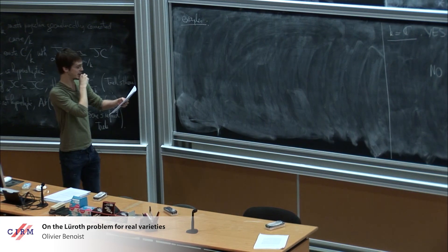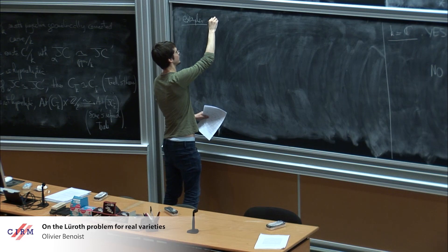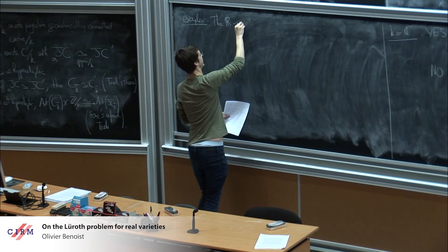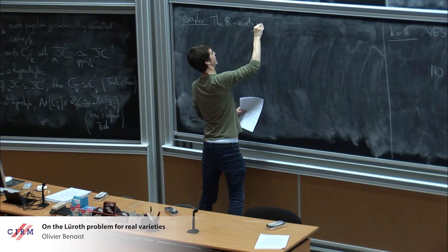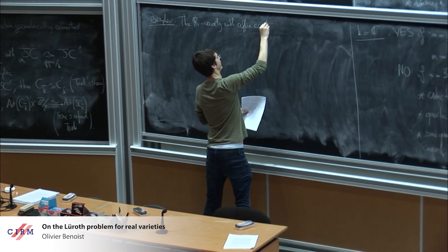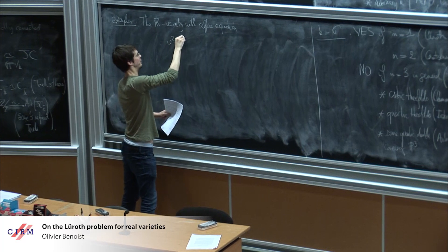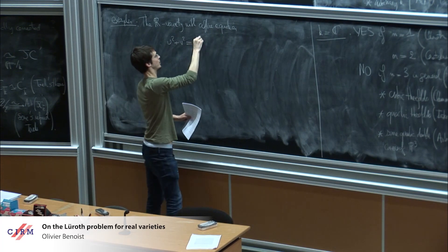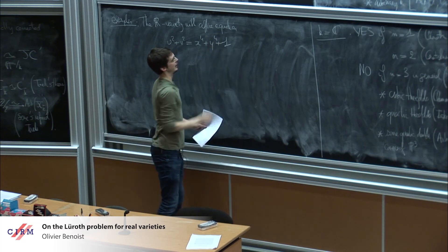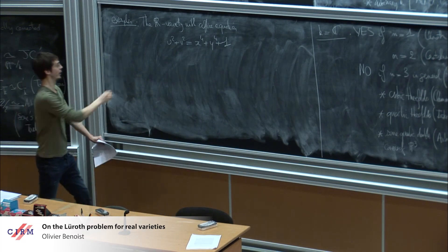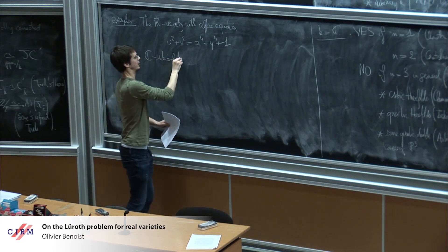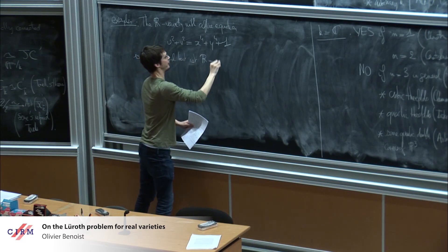The first example is the affine R-variety defined by U² + V² = X⁴ + Y⁴ + 1. This is C-rational but not R-rational. Here the surface is P²_R with affine coordinates X, Y; α equals −1, which is not a square in R; and the curve C is a smooth plane quartic in P², which is not hyperelliptic since it is a plane curve of degree at least 3.